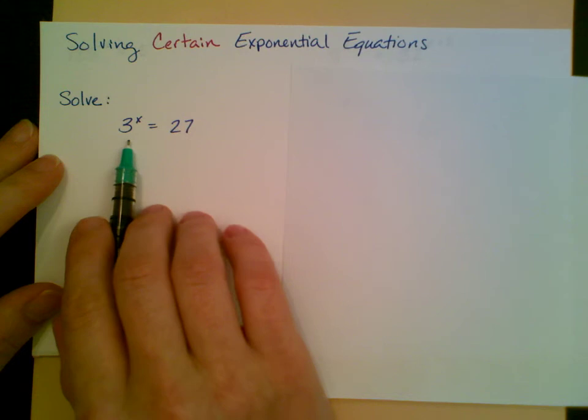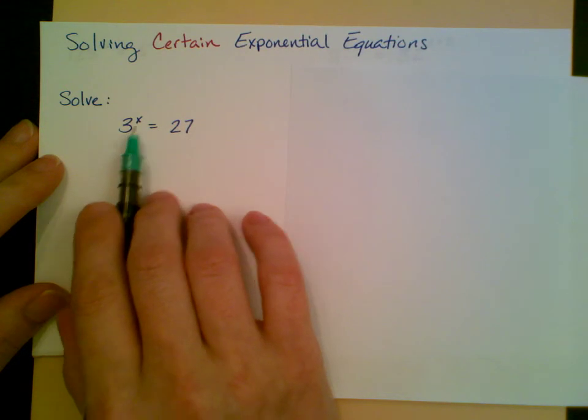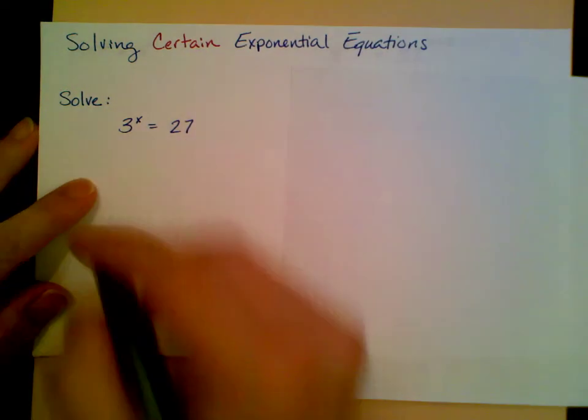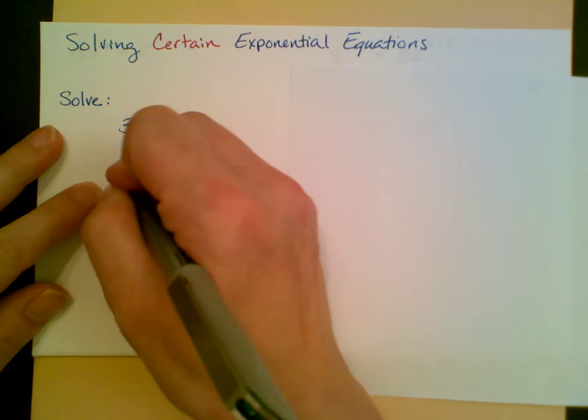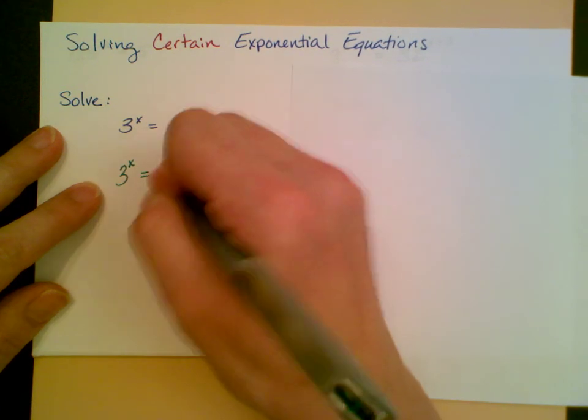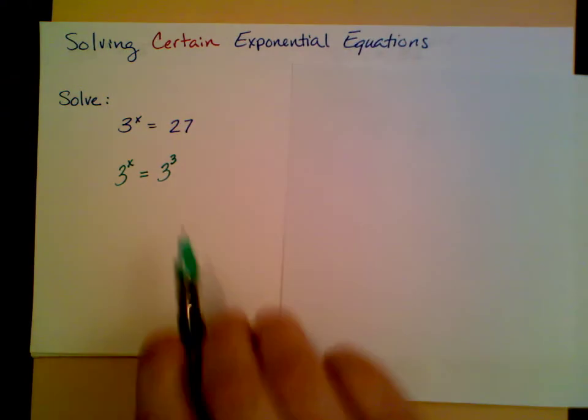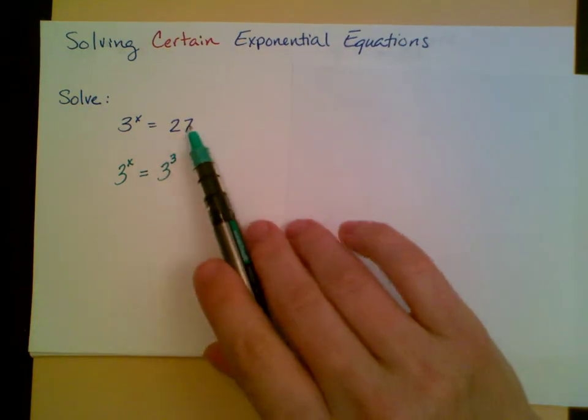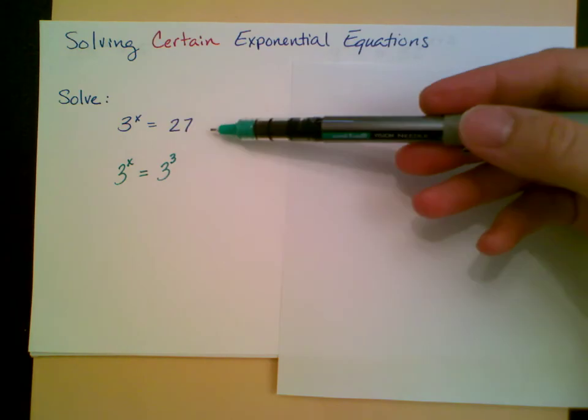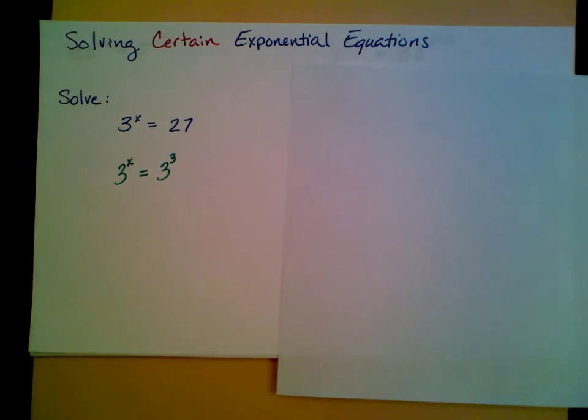Notice I've got the equation 3 to the x equals 27. Now I can rewrite this as 3 to the x equals 3 cubed. I happen to know that 27 is 3 cubed, and in fact, that actually lets me jump straight to the answer.